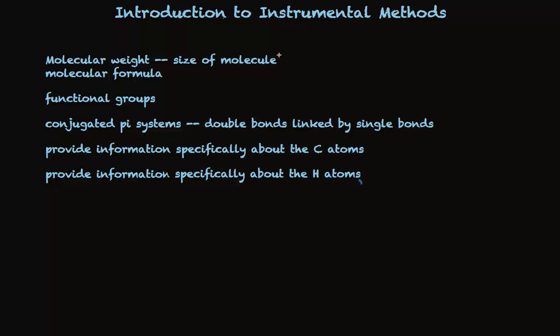The instrumental technique that provides this information is called mass spectrometry. We often abbreviate it MS. This technique that looks directly at functional groups is called infrared spectroscopy, abbreviated IR.